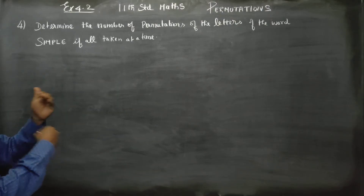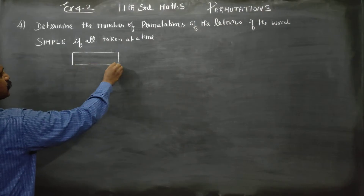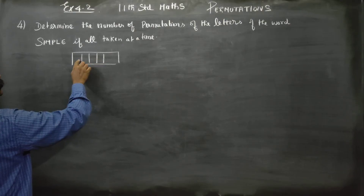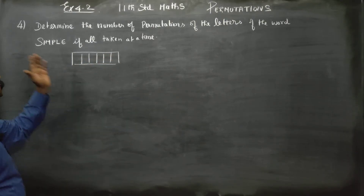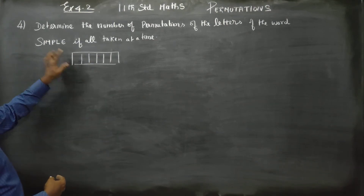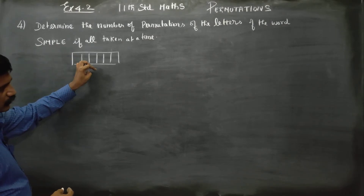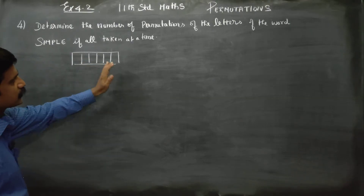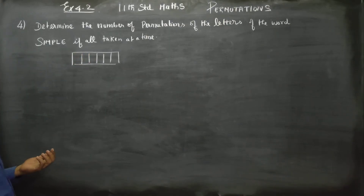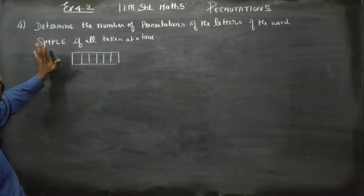For the word SIMPLE, we need to find in how many different ways we can arrange the letters. SIMPLE has 6 actual spaces given — 1, 2, 3, 4, 5, 6. We place the letters of SIMPLE in those 6 places. Using the fundamental principle of counting, the first place can be filled by any of the 6 letters: 6, 5, 4, 3, 2, 1. This is a rearrangement of the alphabets S-I-M-P-L-E.